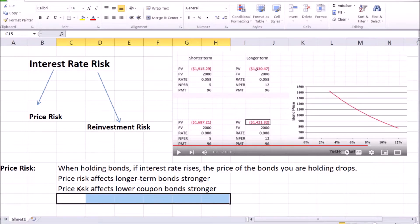One more thing to mention about price risk is that price risk affects lower coupon bonds stronger than it affects higher coupon bonds. Let's have a look at an example.